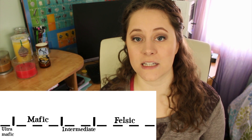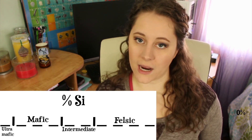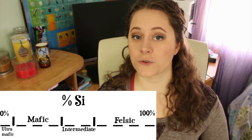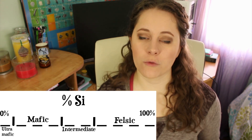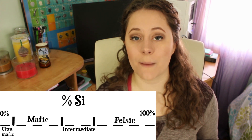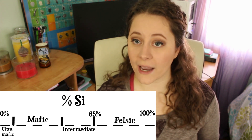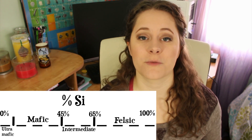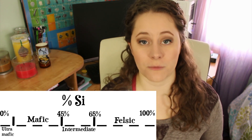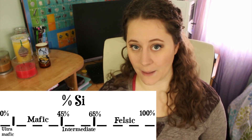Mafic and felsic deals with composition, specifically how much silica is in the rock. The higher the percentage of silica, the farther towards the felsic end of the spectrum you go. As a general rule, a rock or magma that has a composition of 65% silica or higher is considered felsic. A rock that has 45% or less is considered mafic. That gray area in the middle is the intermediate composition.